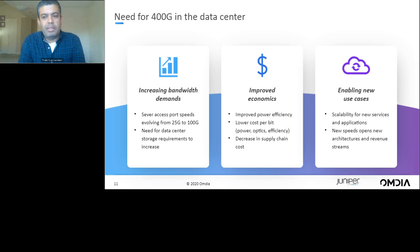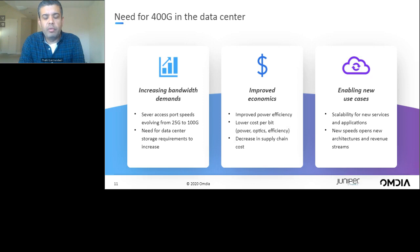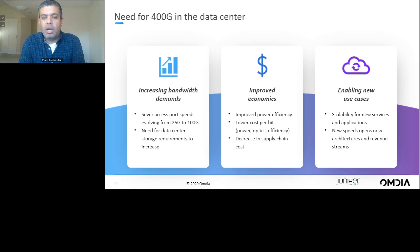Data center fabric speeds tend to follow server access speeds. We expect 25 gig to remain strong for the next few years, but we're already seeing momentum around 100 gig and 50 gig server access. As server access speeds move from 25 gig to 100 gig, data center fabric bandwidth generally moves in lockstep from 100 gig to 400 gig. The proliferation of data and the need to crunch data in real time using AI and ML is also increasing pressure to improve storage access speeds and performance — which is what 400 gig provides. Capacity and applications have always held a symbiotic relationship, and new applications around gaming, AI, and autonomous driving will only drive further network capacity upgrades.